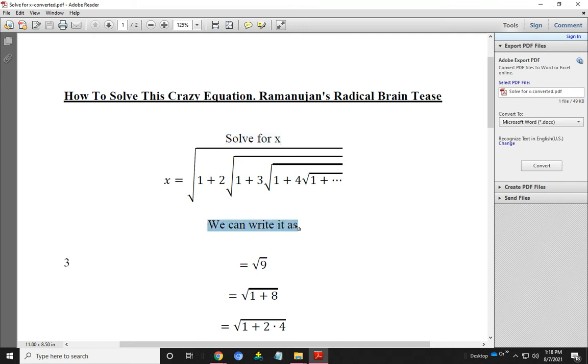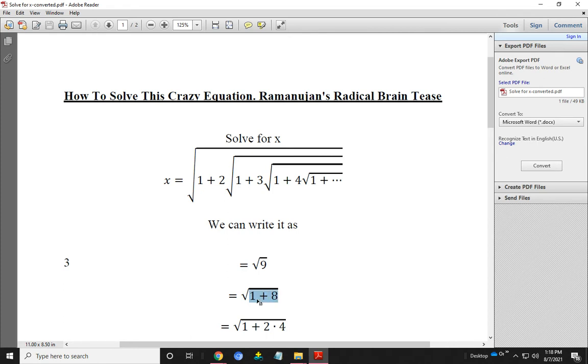Here we write the equation as 3, that is 3 equals root over 9. We know that root over 9 means 3. Then we break this 9 as 1 plus 8, root over 1 plus 8. Then we write 8 is 2 into 4, that is root over 1 plus 2 into 4.